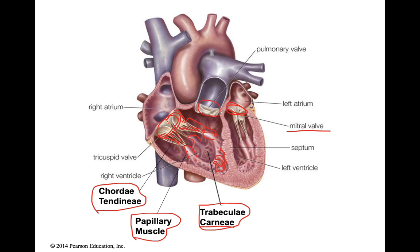There are two other valves called semilunar valves — one leading to the pulmonary trunk and one leading to the aorta, which I'll show you in a different picture. The tissue that separates the ventricles is called the interventricular septum. The tissue that separates the atria is called the interatrial septum. Make sure you know the anatomy from this illustration.